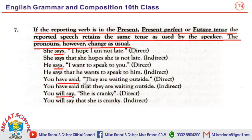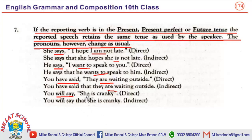Inverted commas کے اندر جو آپ کا verb ہے، جو زمانہ ہے، وہ change نہیں ہوگی۔ Am ہے present میں تو وہ present میں ہی رہے گا۔ Want to speak — wants to speak — are میں ہی رہے گا، اور is اس میں ہی رہے گا۔ However, you will change the pronouns. آپ pronouns کو change کریں گے جیسے you will say 'she is cranky' or 'that she is cranky' — pronouns اس کے مطابق change ہو جائیں گے، لیکن آپ کا زمانہ change نہیں ہوگا۔